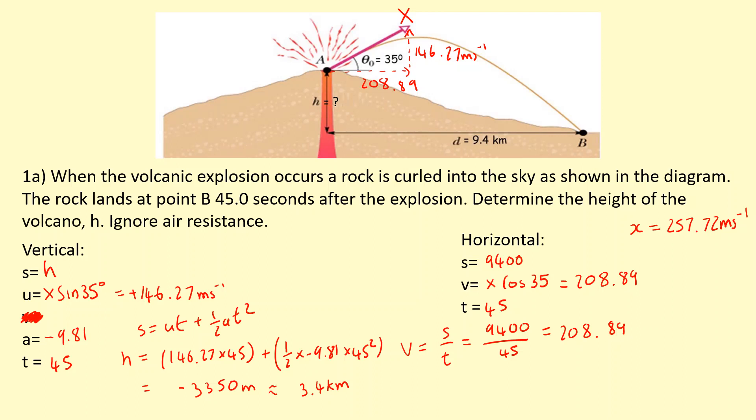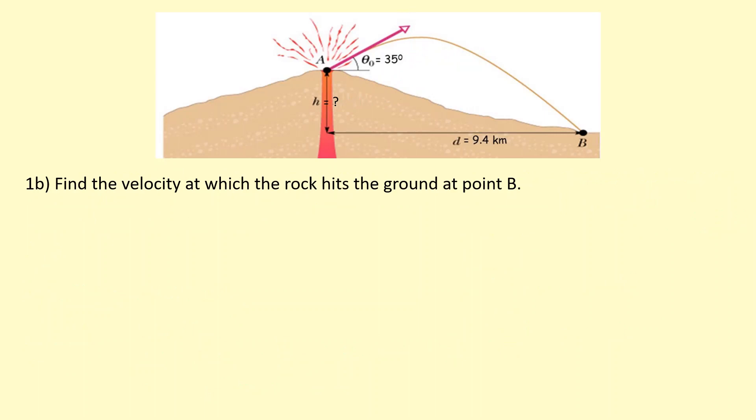Now we've been asked to find the velocity at which the rock hits the ground at point B. Obviously it's going to be going downward and we want to find this speed. Because velocity is a vector, we also want to find an angle to see how much it's going downwards.